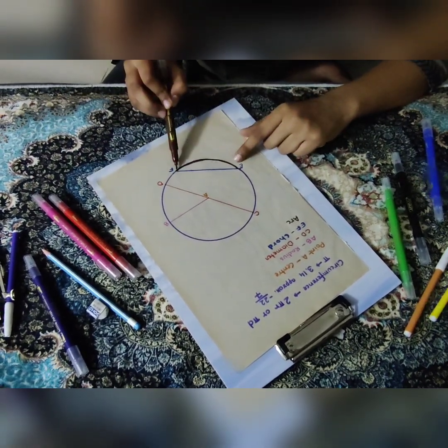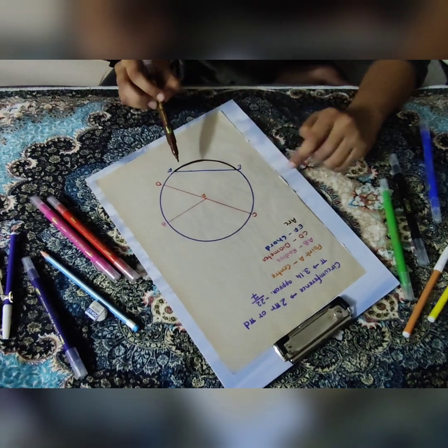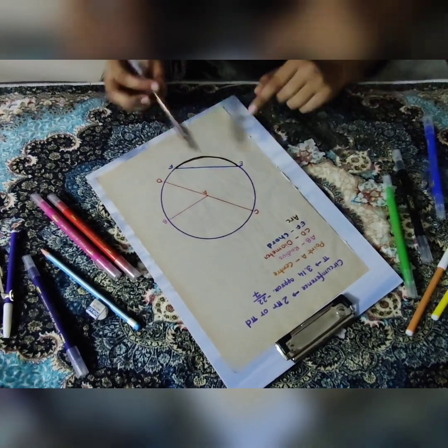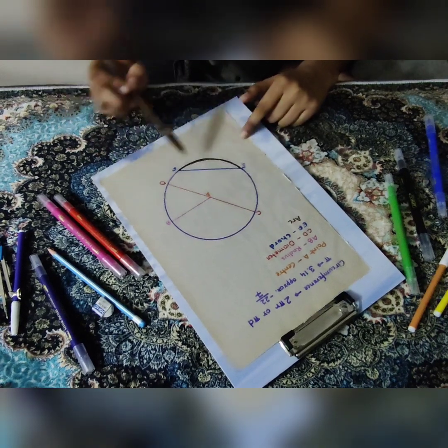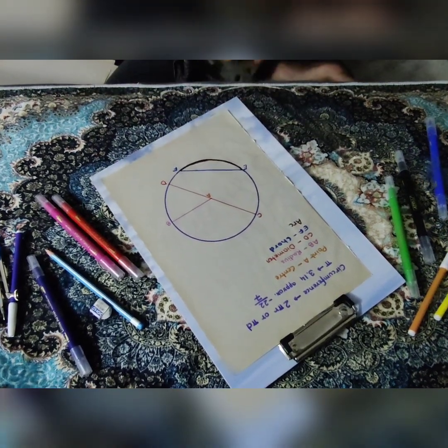So the smaller arc that I have here, EF, that's our minor arc. And the bigger one, this area, it's our major arc.